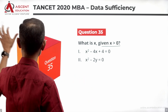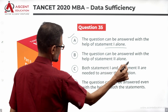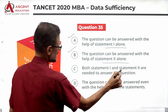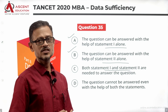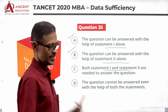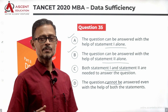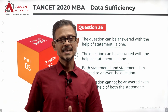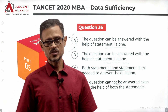The answer options are as follows: A — Statement 1 alone is sufficient. B — Statement 2 alone is sufficient. C — Both statements combined are needed to answer. D — The information in the statements is insufficient.